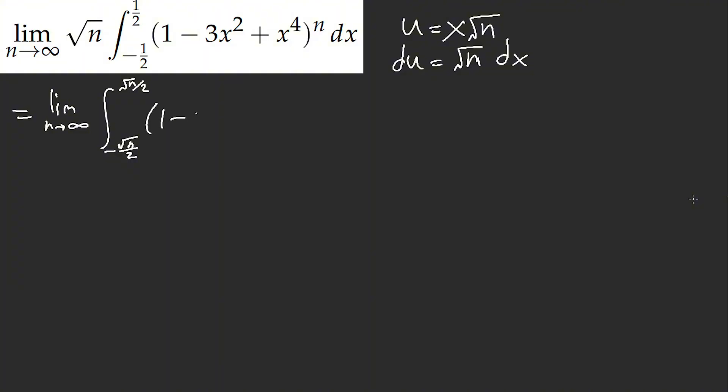And then now we have 3, let's see, x is equal to u over root of n. So we have 3u squared over n, plus then u to the power of 4 over n squared, all to the power of n.